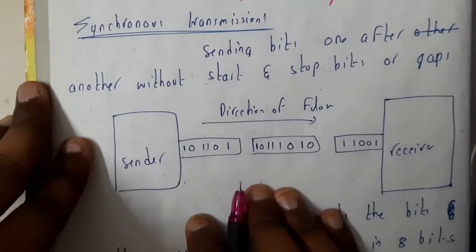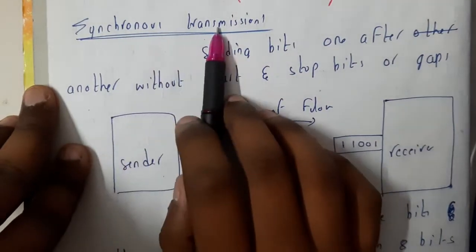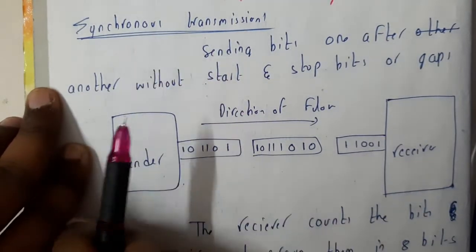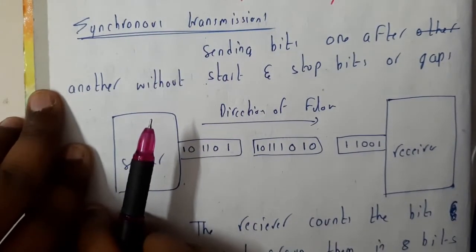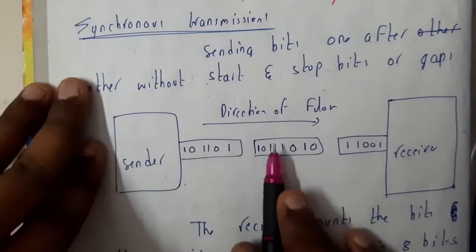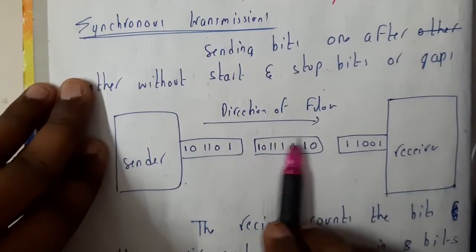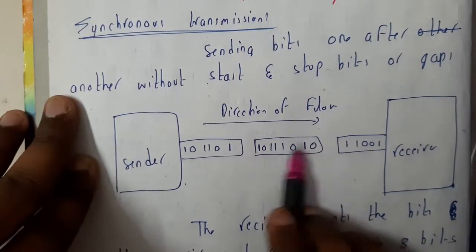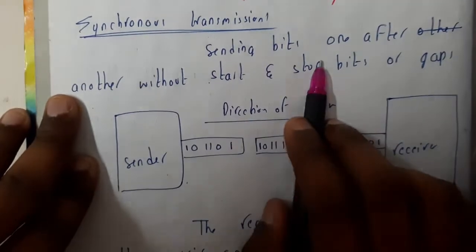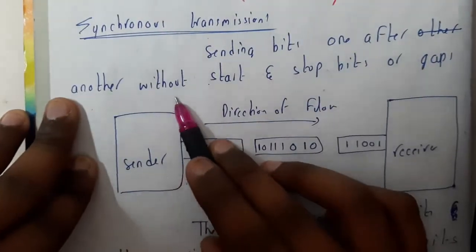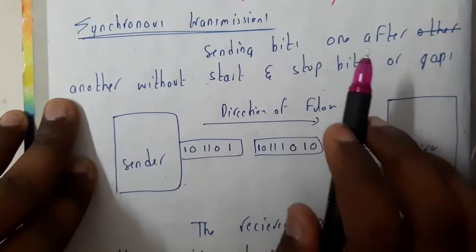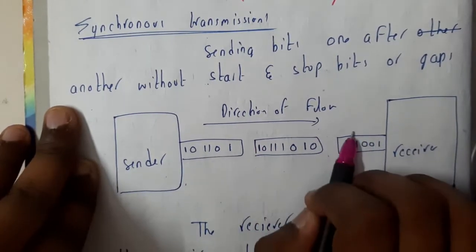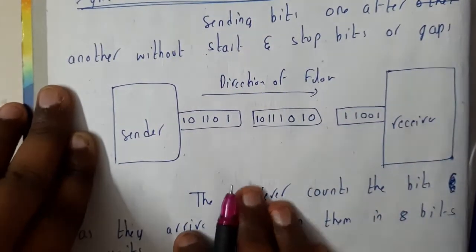Serial transmission is divided into synchronous and asynchronous. In synchronous transmission, after every complete eight bits of transfer we have a gap of time. We send bits one after the other without start and stop bits. Instead, we use gaps to indicate where each 8-bit code begins and ends, so the data is grouped in that way.